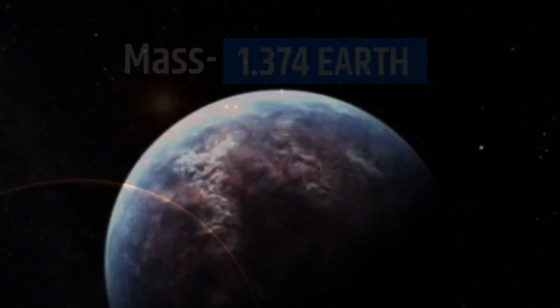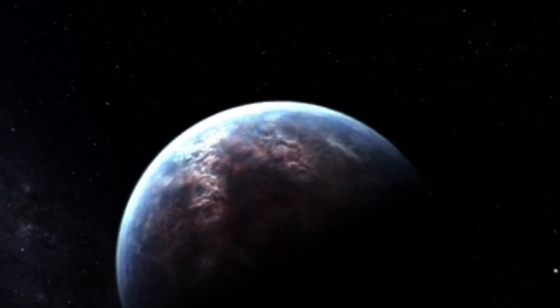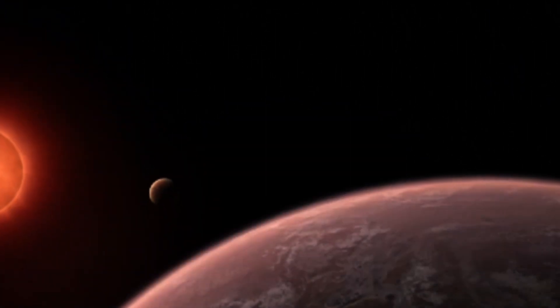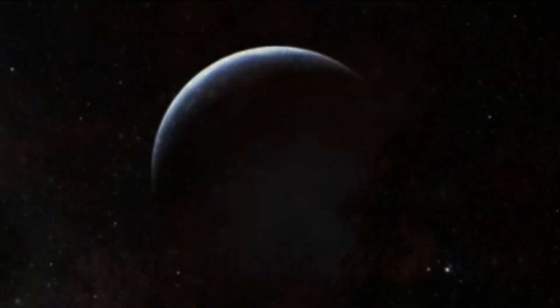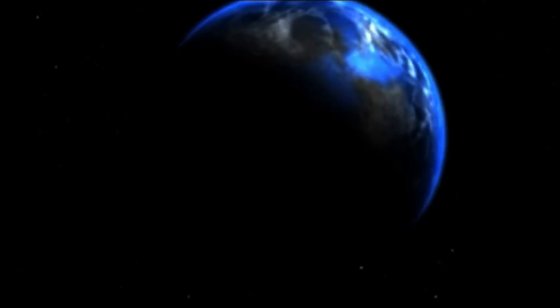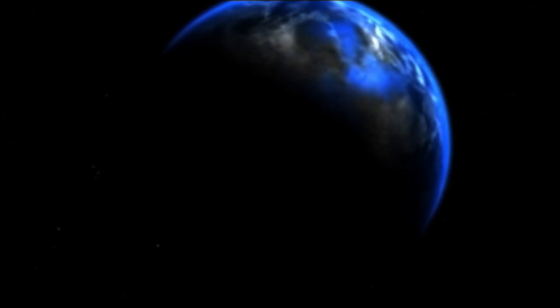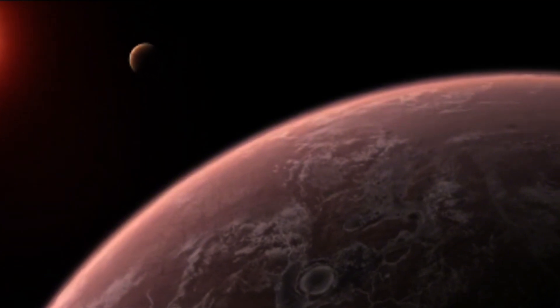Despite their allure, M dwarf stars like TRAPPIST-1 are not without their complexities. They exhibit heightened activity, including flaring and emitting high-energy rays that could pose challenges for potential habitability. As astronomers ponder the cosmic balance between promise and peril, TRAPPIST-1b remains an enigma. Previous observations left uncertainties regarding its atmospheric composition. Could it harbor life-sustaining conditions, or is it merely a barren rock adrift in the cosmic expanse?